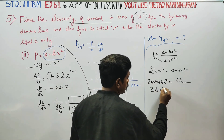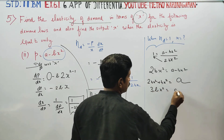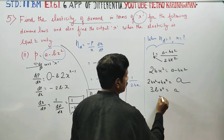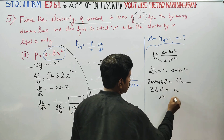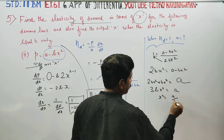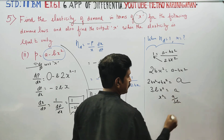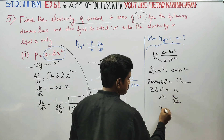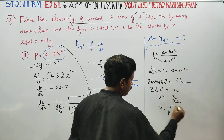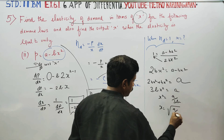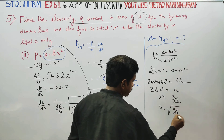3Bx square is equal to A. Therefore x square is equal to A by 3B. So x is equal to plus or minus the square root of A by 3B.